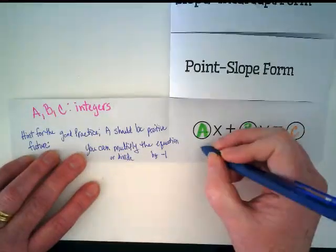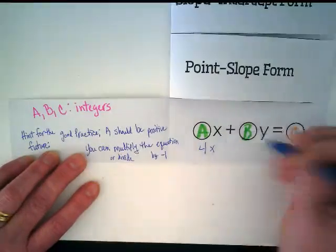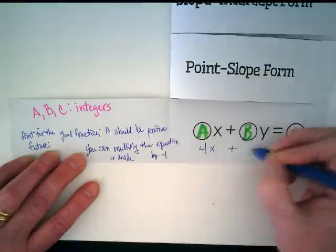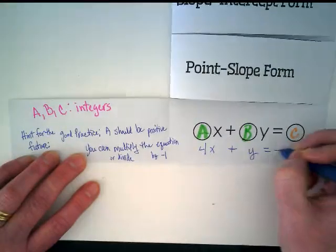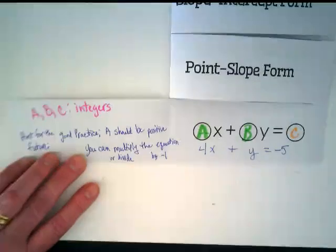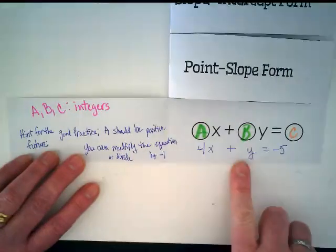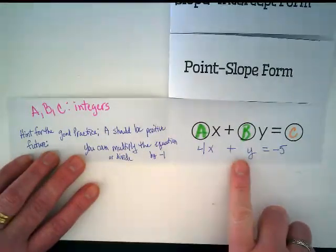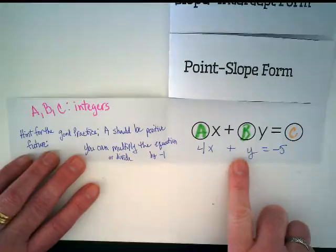So in our example, this would be 4x plus y is equal to negative five. There's nothing in front of the y, so what's the B here? An invisible one.